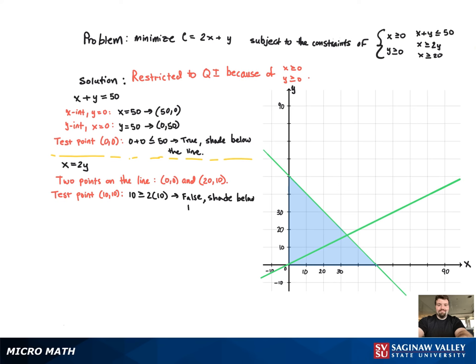10 is not greater than or equal to 20. So that means we shade the region that does not contain the point 10, 10, which is below the line.